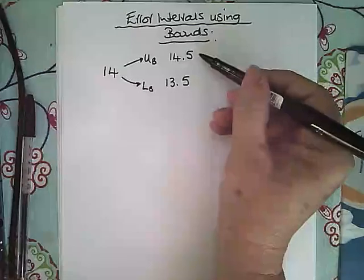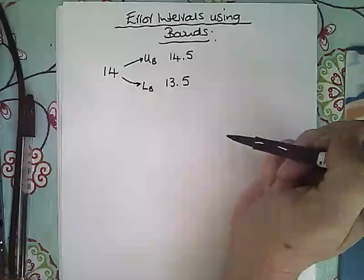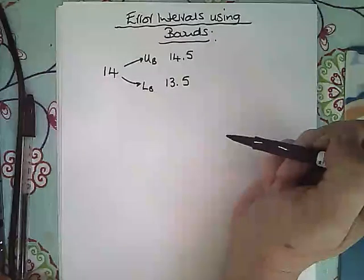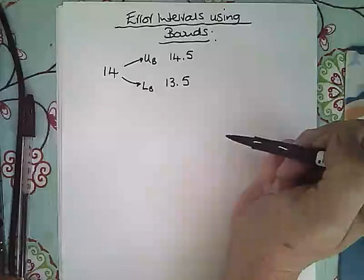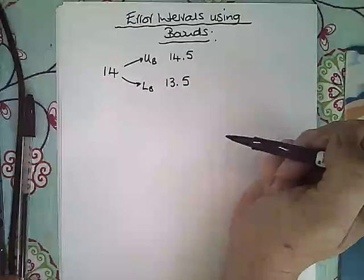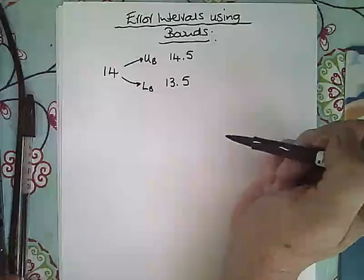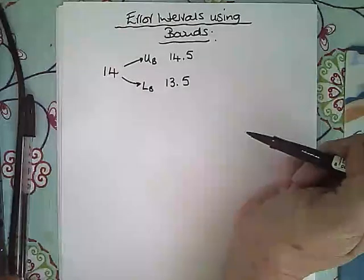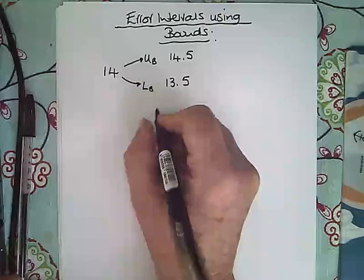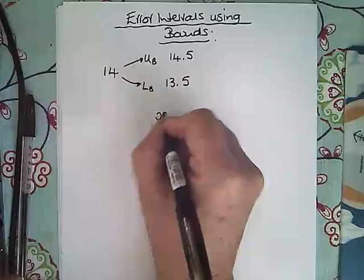When we're writing the error interval for this measurement then we need to use inequality signs and consider whether or not the value could actually be equal to or whether it only goes up to one of the bounds. So if I put the 14 in the middle, that would be the x, our number that we are given.